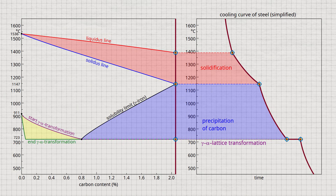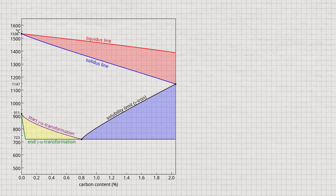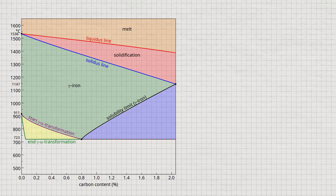For steels, the phase diagram looks like this. Let's summarize the main areas. Above the liquidus line the steel is completely molten. Solidification takes place between the liquidus and solidus line. In the area below the solidus line, marked in green, the steel is completely solidified and the iron is in the face-centered cubic lattice structure of gamma-iron. The carbon is initially completely dissolved in this lattice.